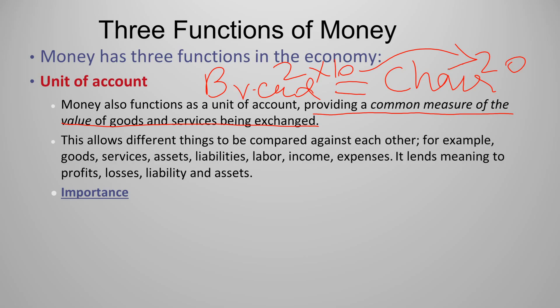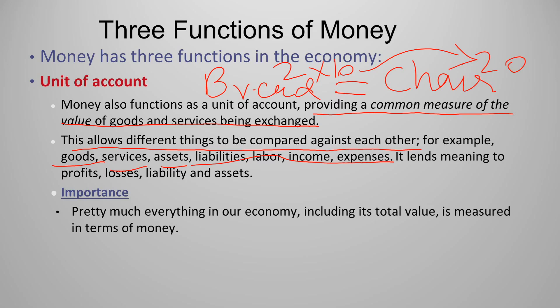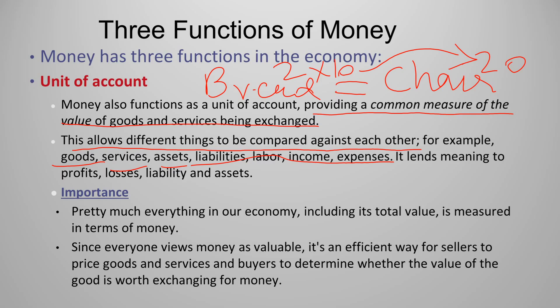The first function — medium of exchange — allows sellers and consumers to exchange goods and services. The second — unit of account — provides a common measure of the value of goods and services exchanged, allowing different things like goods, services, assets, liabilities, labor, income, and expenses to be compared against each other. The importance of this function is that practically everything in our economy, including its total value, is measured in terms of money, making it an efficient way for sellers to price goods and services.